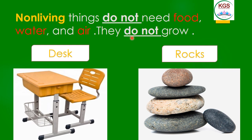Those are examples for non-living things. Look at this picture — this is a desk. You have it at school. This is a non-living thing because it doesn't need food, water, and air and it can't move. Look at those rocks — those are rocks. Same as the desk, this is a non-living thing. It doesn't need food, water, and air; they don't grow.